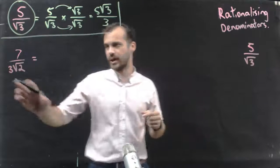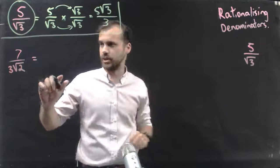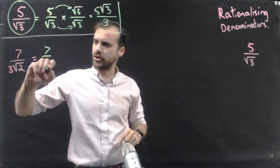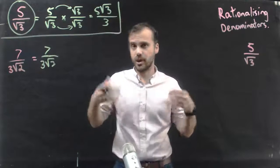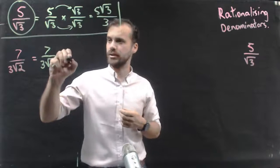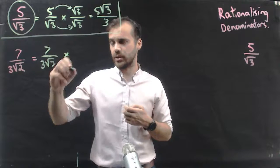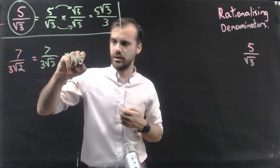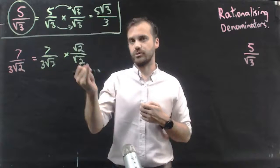A second example here. I have something with an irrational denominator, and I need to rationalize the denominator. So it's going to be 7 on 3 root 2. And again, I need to multiply this by 1, because if I multiply it by 1, it won't change, except for the fact that it will look a bit different. I'm not going to multiply it by everything on the bottom. I'm just going to multiply it by the irrational part of the bottom. I'm just going to multiply it by root 2 on root 2.